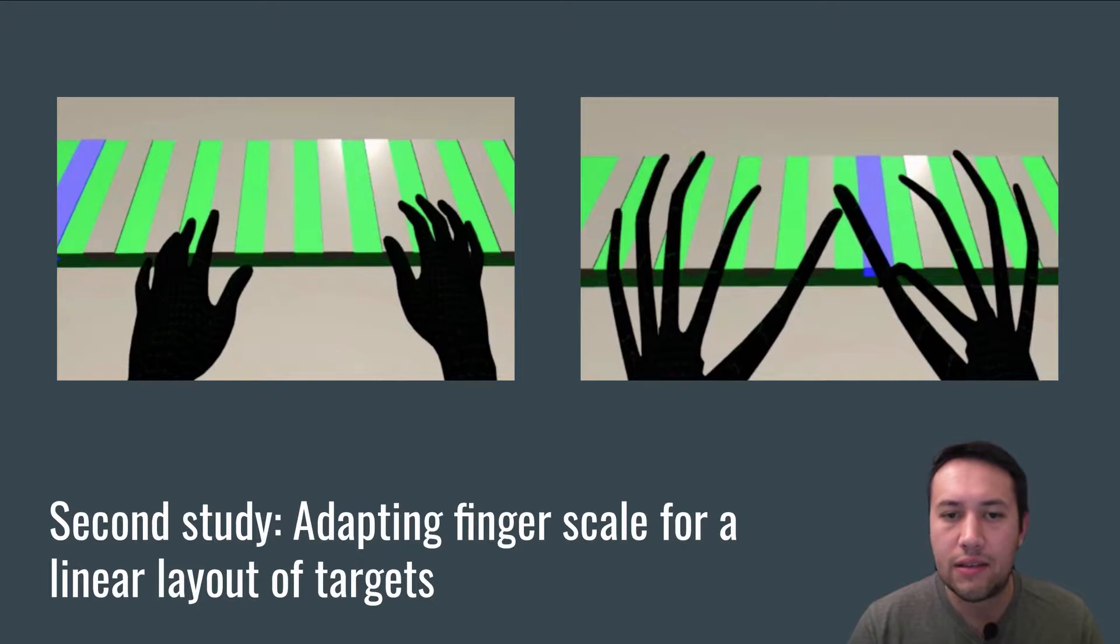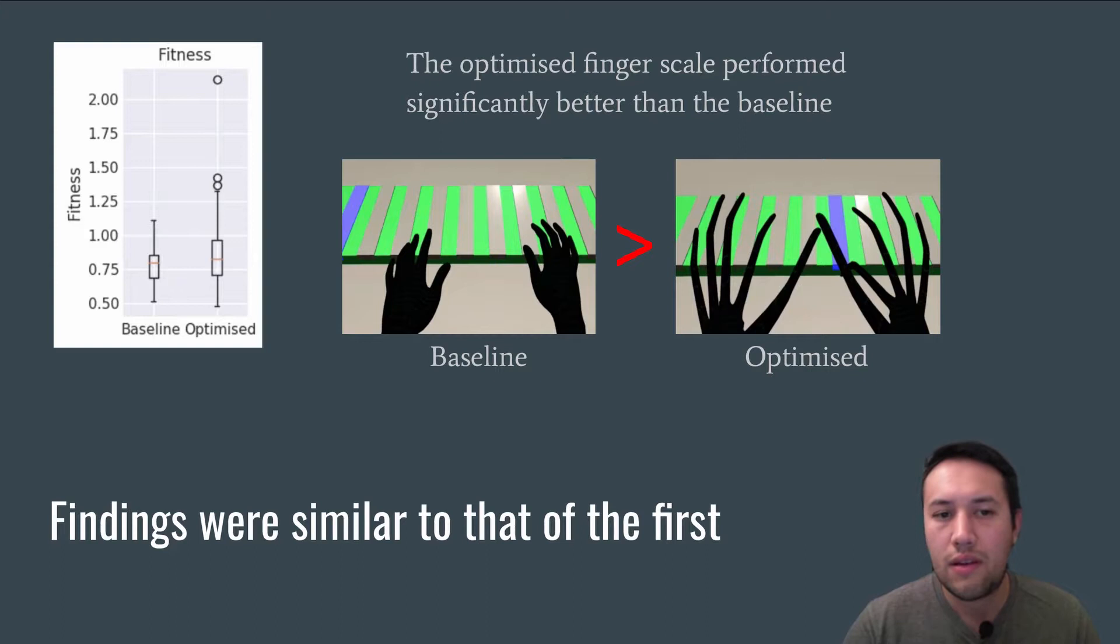The adaptation is instead finger scale, and we used the Bayesian optimizer. Here you can see an example of a baseline hand versus an optimized version with very long fingers. Although it might look quite strange, they are useful since they allow the user to tap the targets with minimal hand movement. Similar to the first study, the optimized finger scale performed significantly better than the baseline.